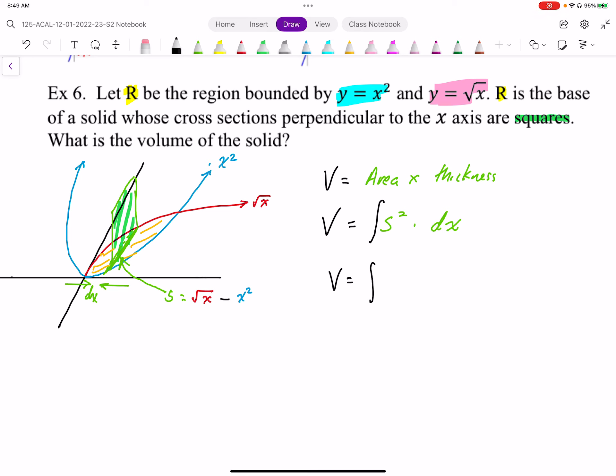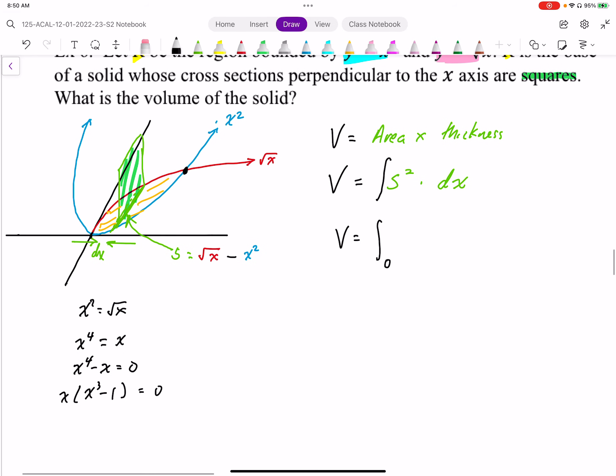In this case, we have our integration bounds. Our lower bound is 0. And when we solve x squared equals root x, this gives us the upper bound. So when I undo this, I'm going to end up with x to the fourth equals x. Then we get x to the fourth minus x equals 0, x cubed minus 1 equals 0. We get the solution x equals 1 and x equals 0. So those are my bounds.